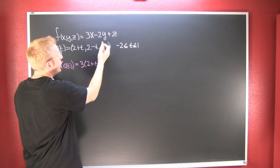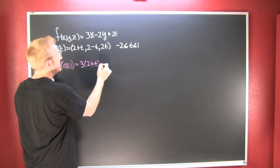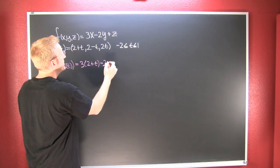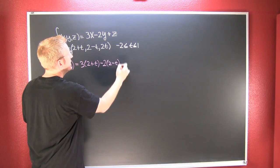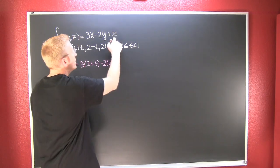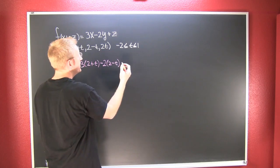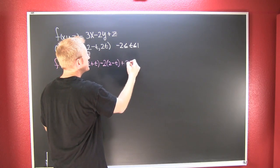And then, everywhere I see a Y, I'm going to put a 2 minus T. So this is minus 2 times 2 minus T. And then, where I see a Z, I'm going to put a 2T. So this is going to be plus 2T.